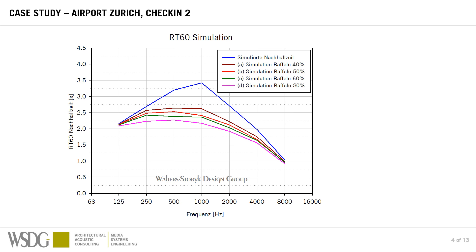You see here a simulation result curve. On the x-axis there's frequency from low to mid to high, and the y-axis going upward is the reverberation time — the RT60 — in seconds, from 0 to 4.5 seconds. The blue line shows the reverberation over frequency of the non-treated space. That reverberation time of 3.5 seconds is clearly too high. By introducing multiple percentages of baffles — 40, 50, 60, and 80% — we bring down these reverberation time curves.